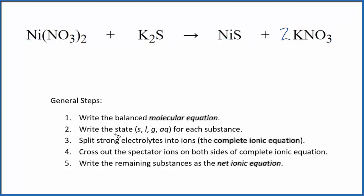Now we need to write the state for each substance, and that looks like this. Compounds with the nitrate ion are very soluble, so both nickel 2 nitrate and potassium nitrate are going to be soluble, dissolve, and break apart into their ions.